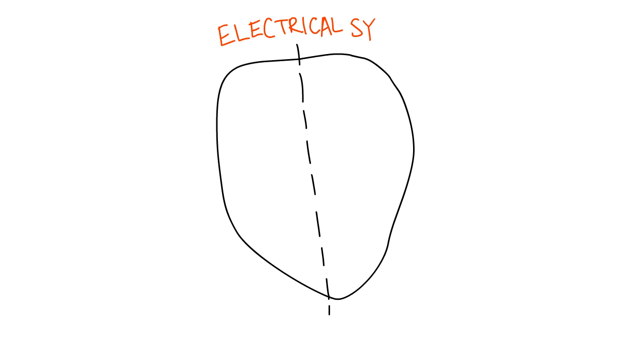The heart also has an electrical system. An impulse triggers an electrical wave that travels throughout the heart. This tells the heart to beat and pump blood.